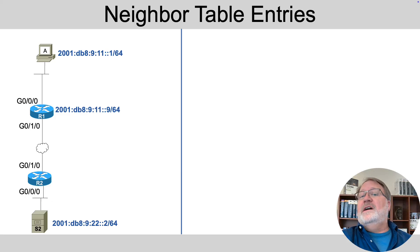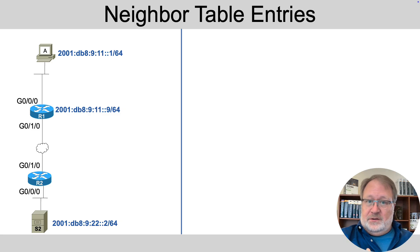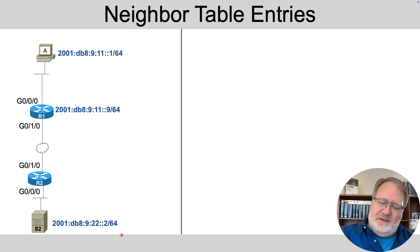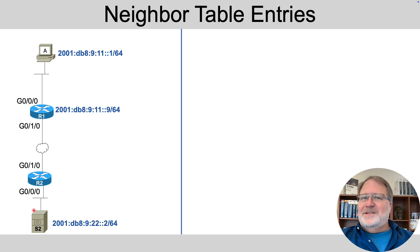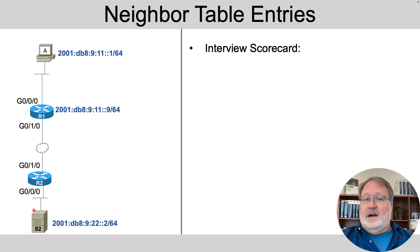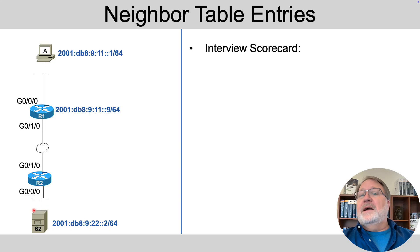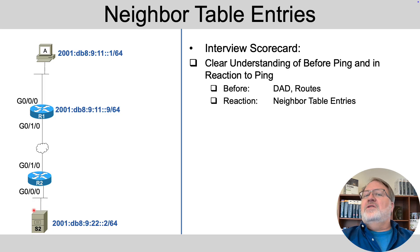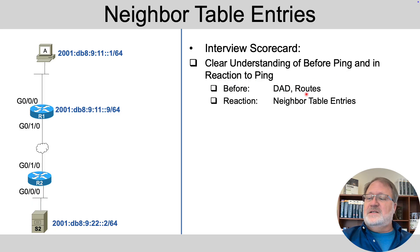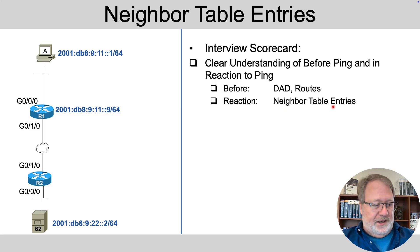Everything that's happened so far is overhead that happens up front before the ping. Then months could go by. And finally, A pings server S2's global unicast address. That packet is going to have a source of A's global unicast and a destination of S2's global unicast. Some interesting things happen here, especially regarding neighbor table entries. For my interview scorecard, I want to hear about the clear understanding of the line between what happens before the ping and in reaction.